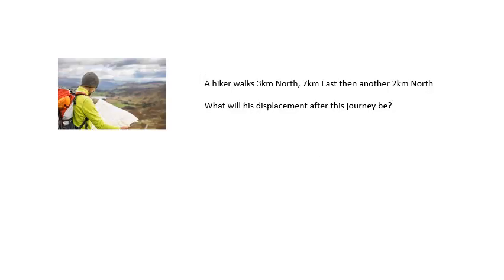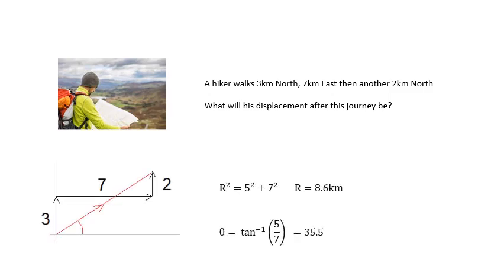Here's a simple little question for you to have a go at. A hiker walks 3 kilometers north, 7 kilometers east, and then another 2 kilometers north. What will his displacement after this journey be? I'll show you my answer in 3, 2, 1. I've drawn a vector diagram. Looking at the vector diagram, it should be obvious r squared will be 5 squared plus 7 squared, and theta will be tan to the minus 1 of 5 over 7. When vectors are in the same direction, or opposite directions, or if vectors are all at right angles to each other, piece of cake, adding them together.